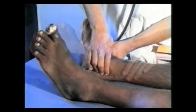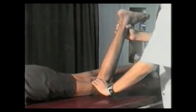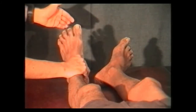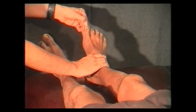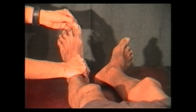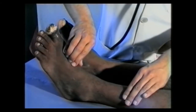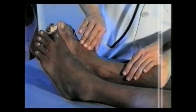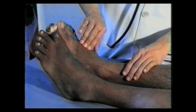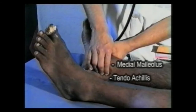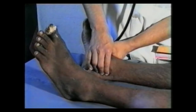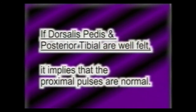Now we shall study in detail the method of palpation of the pulsations of the arterial tree at various levels to note the state of arterial circulation. First, test the capillary circulation in the nails — blanch the nail by pressing its tip, release the pressure, and note the time taken by the nail bed to turn pink again, giving a rough idea of the rate of blood flow in the capillaries. Then palpate the dorsalis pedis artery at the proximal end of the first metatarsal space, just lateral to the tendon of extensor hallucis longus, against the navicular and middle cuneiform bones. Palpate the posterior tibial artery midway between the medial malleolus and tendo achilles against the calcaneum, keeping the foot dorsiflexed and inverted. If dorsalis pedis and posterior tibial are well felt and normal, it implies that the proximal pulses are bound to be normal.